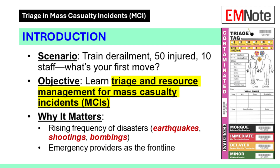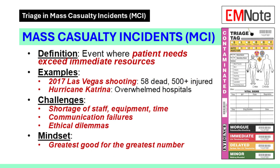Why does this matter? Disasters — earthquakes, shootings, bombings — are happening more often, and as emergency providers, we're the front line. So what's a mass casualty incident, or MCI? It's any event where the number of patients or the severity of their injuries exceeds your immediate resources.